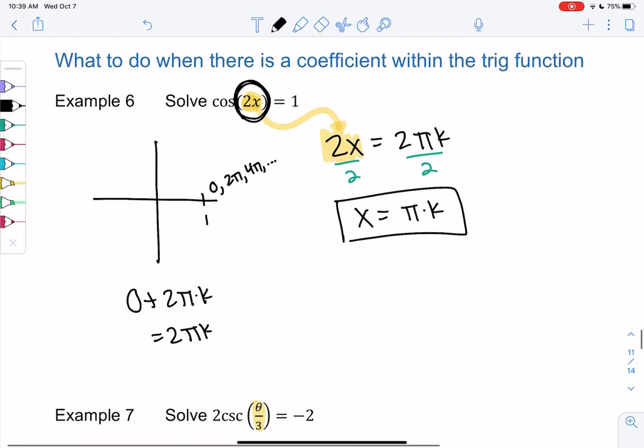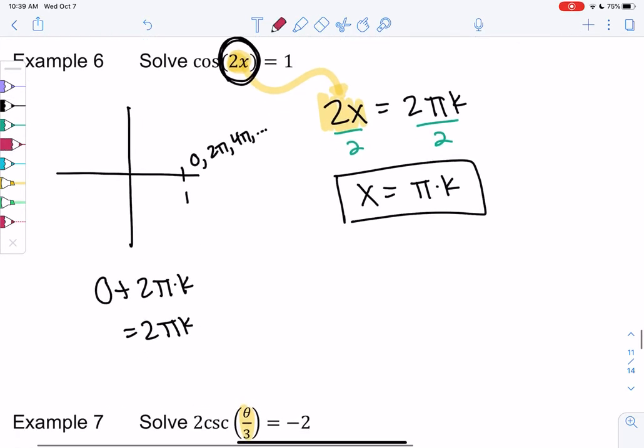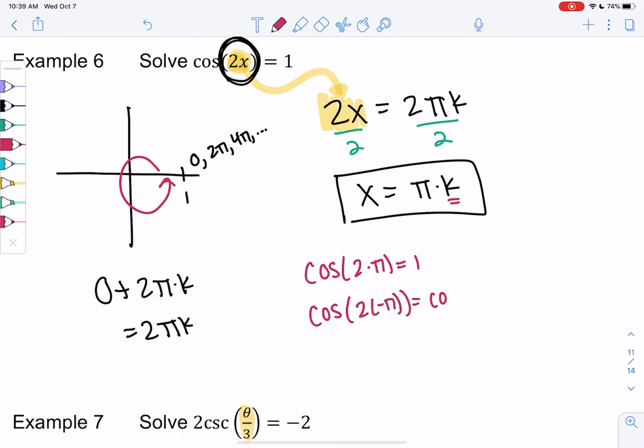And if you wanted to check, we could plug in a couple angles. We could plug in π. Basically any multiple of π should work. So cosine of 2π is 1, right? That would be one loop. Let's try another one. Let's try negative π, right? Because k can be negative. So 2 times negative π will be cosine of negative 2π, which is just going backwards. So that's also 1.